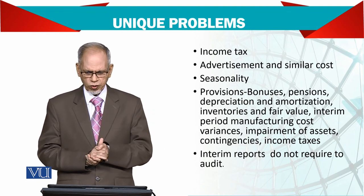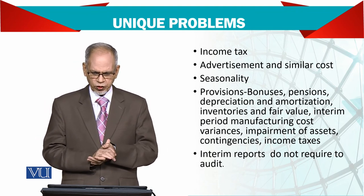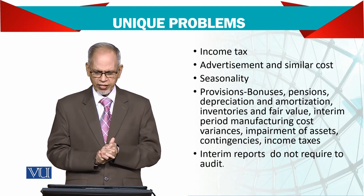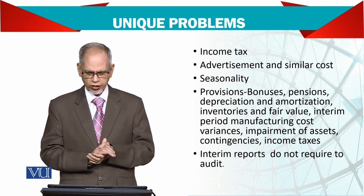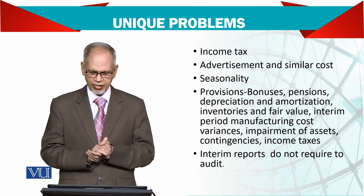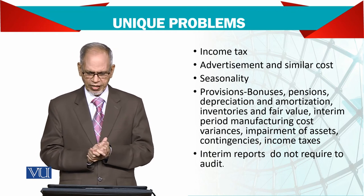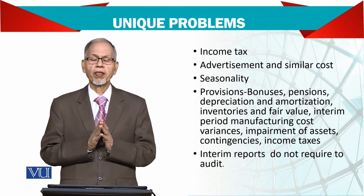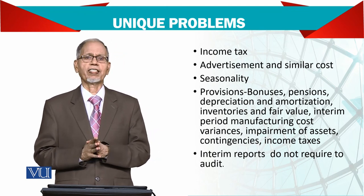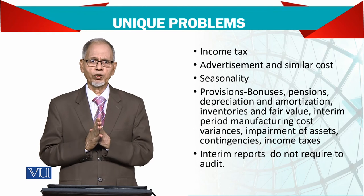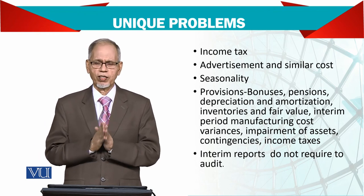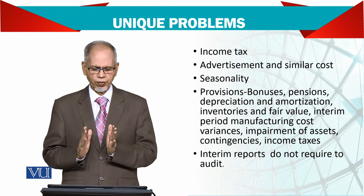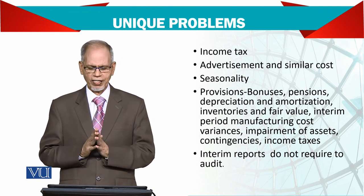Provision, bonuses, pensions, depreciations and amortization, inventories and fair value, interim period manufacturing cost variances, impairment of assets, contingency, and income taxes — all of these should be taken into account. They are the unique problems of interim reporting, but we must still consider them, because if you want to show meaningful information to your shareholders and readers, you must make sure these are taken into account.